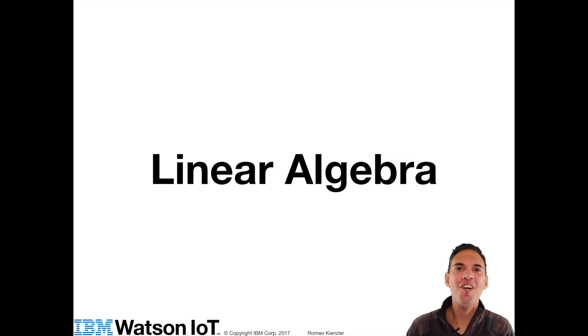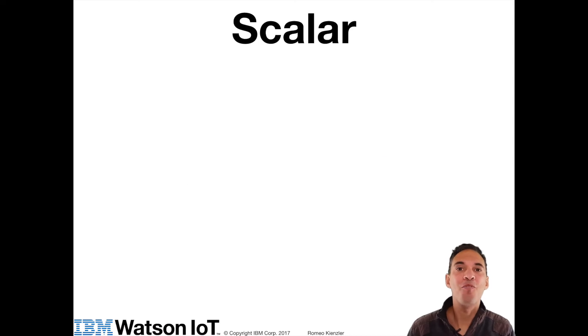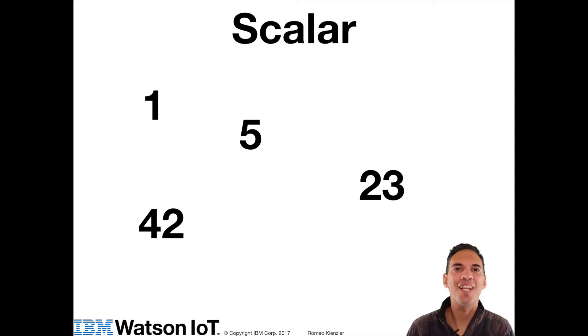Welcome to the lecture on linear algebra. So before we start, let's have a look at some important terms. Let's start with a scalar. A scalar is basically any number, like 1, 5, 23 or 42. But we are not limited to integers, also real numbers are scalars, like 23.5 for example.